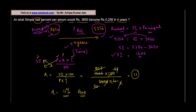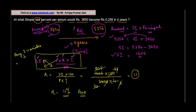Whenever you know any three variables out of the standard simple interest equation — whether given or found — you can always find out the fourth variable.